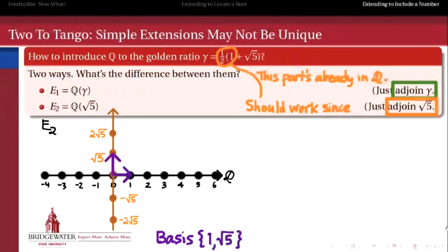So what's the basis for this field E2? At least as it's drawn here, the standard basis consists of the rational number 1 and the irrational number radical 5. So we get this kind of xy plane picture of what E2 looks like. But our job is to figure out how is this different than if we had just thrown in gamma, 1 half times 1 plus radical 5, all together, the whole thing, not just the radical 5 piece. How can we locate gamma inside of E2?